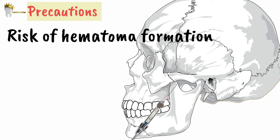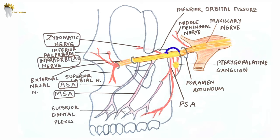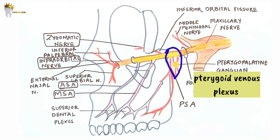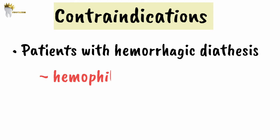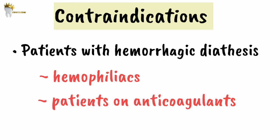The problem with this block is the risk of hematoma formation if the needle is accidentally inserted too far distally. The PSA nerve is given off from the maxillary nerve in the pterygopalatine fossa, which is also where the pterygoid venous plexus and the posterior superior alveolar artery are present. Going too far distally can damage the artery and cause bleeding, forming a hematoma. The risk is even greater in hemophiliacs or patients taking anticoagulant drugs like warfarin, so this block is contraindicated in those cases; infiltration or periodontal ligament injection is recommended instead.